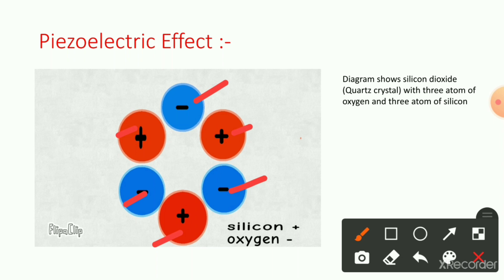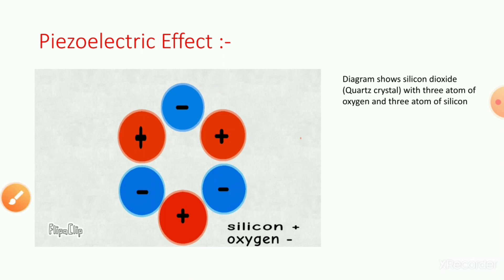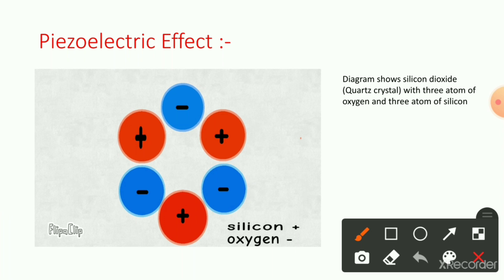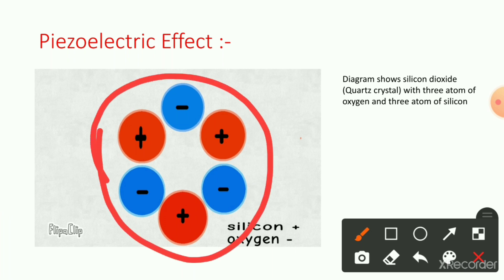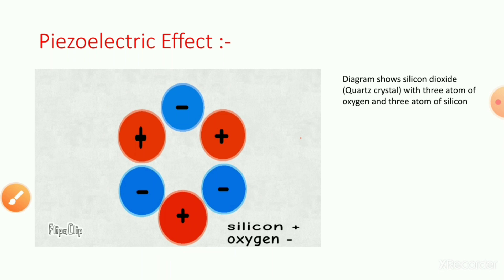In this diagram, you see the charges are mixed. In the normal position of the quartz crystal, the positive charges cancel out the negative charges. This is the normal hexagonal position of the quartz crystal.